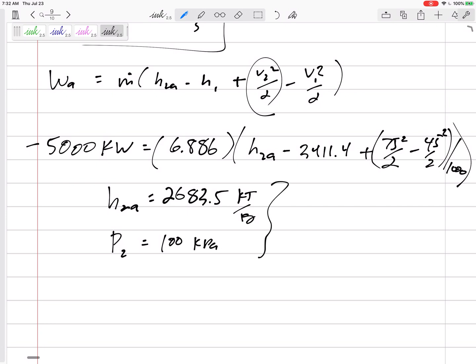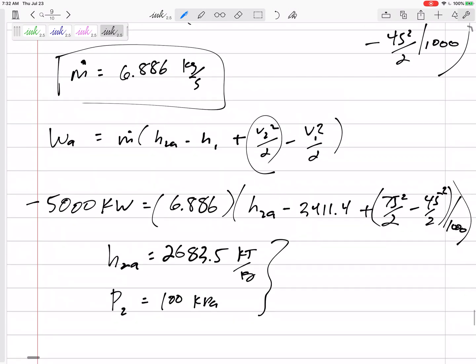So with that and the fact that I know the pressure is at 100 kPa, two pieces of information for steam, I can go to property tables to get anything I want. Is this superheated, is this a mixture? I could find T2 actual = 103.7 degrees C.